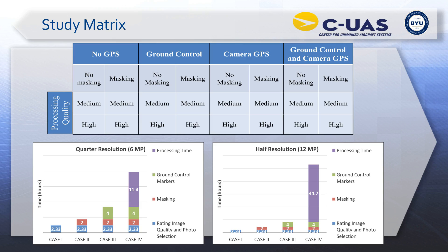One thing we're currently doing is quantifying how much improvement in accuracy each element provides. For a particular job, we may have a requirement for five centimeter accuracy — so what combination of tools, platforms, and cameras will achieve that? Another way to put it: how much do we need to invest to achieve the right level of accuracy for solving the engineering problem? We're doing a study matrix with GPS versus no GPS, ground control points versus no ground control points, and also the quality of images in terms of total time to develop the models.